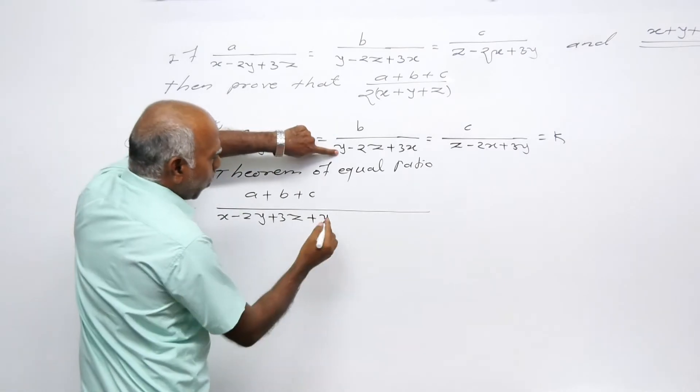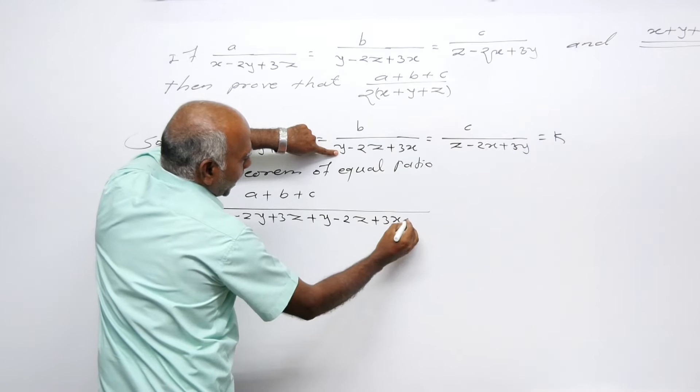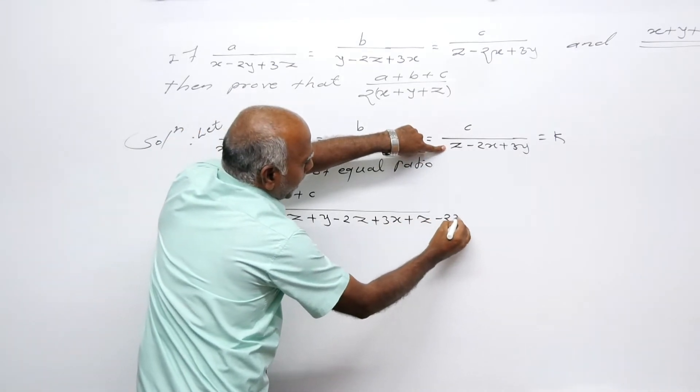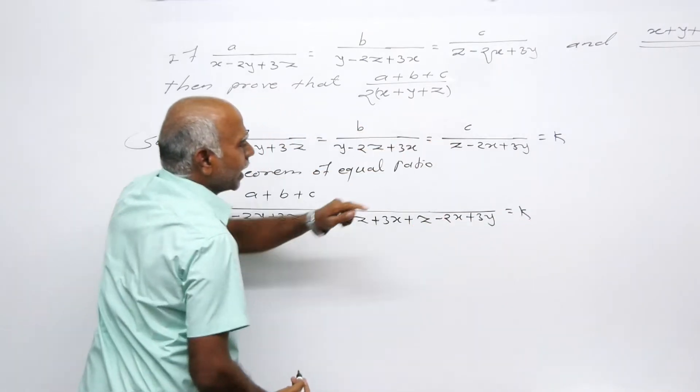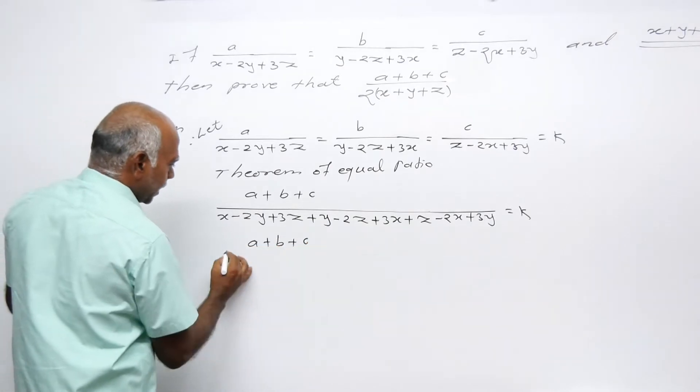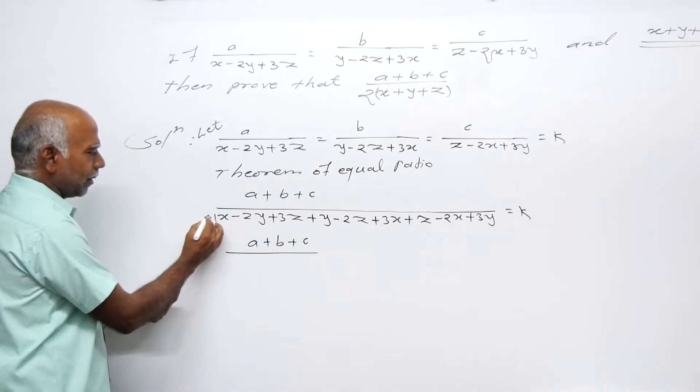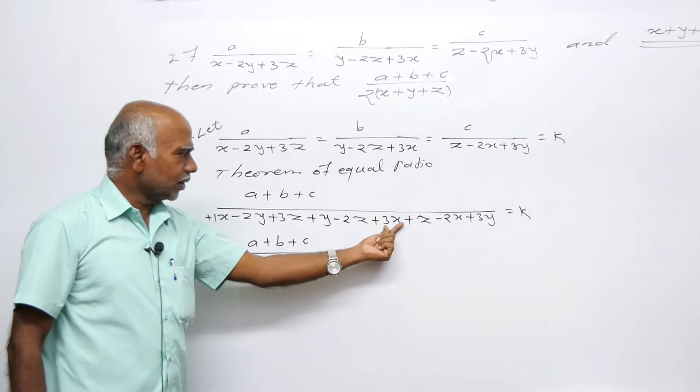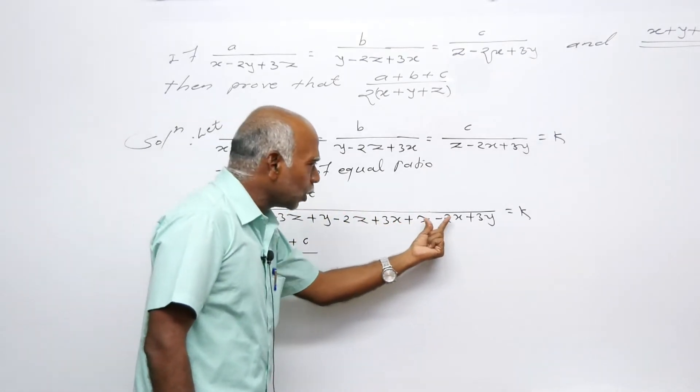By theorem of equal ratio, we get x minus 2y plus 3x plus y minus 2z plus 3y plus z minus 2x plus 3y equals a plus B plus C divided by x.